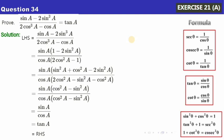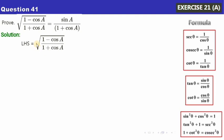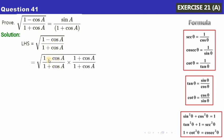Let's move to Question 41. Whenever you see a square root sign, you need to rationalize to get rid of it. Here, within the square root we have 1 plus cosA in the denominator, so we multiply both numerator and denominator by 1 plus cosA. The denominator becomes (1 plus cosA)², and the numerator becomes (1 minus cosA)(1 plus cosA), which is the form (a minus b)(a plus b) = a² minus b², giving 1 minus cos²A.